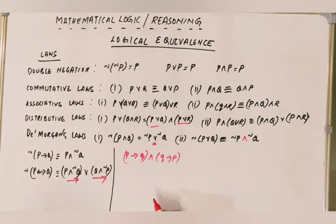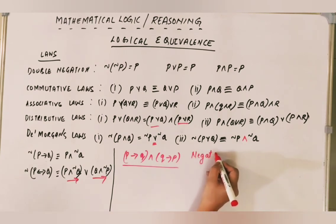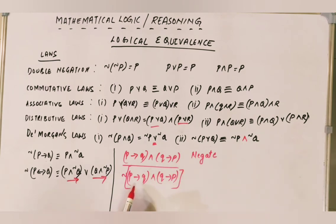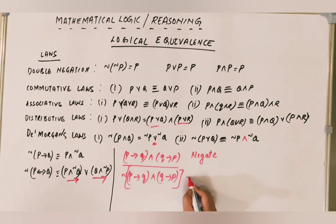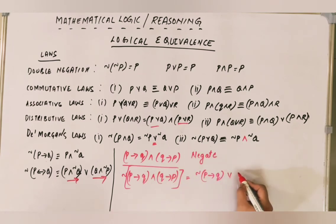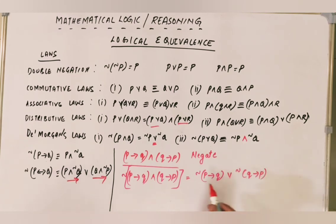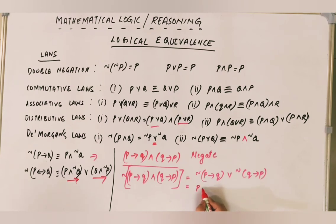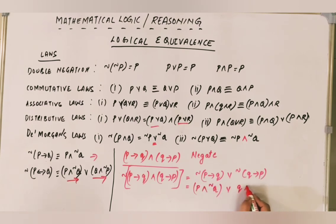Let's solve negation examples. To negate NOT (P AND Q) conditional P: using De Morgan's law, negation of (P AND Q) splits into NOT P OR NOT Q, with AND becoming OR. Then for the conditional portion, negation of (P conditional Q) becomes P AND NOT Q. So NOT P OR NOT Q becomes split further using the conditional negation law, giving (NOT P AND NOT Q) OR (Q AND NOT P).